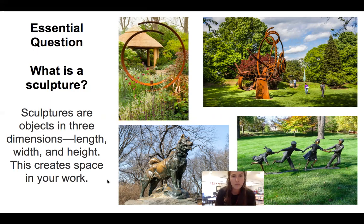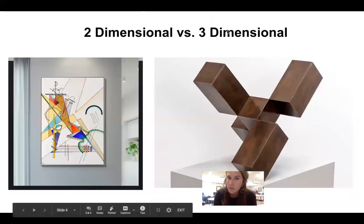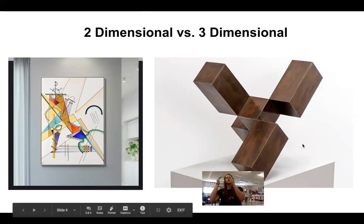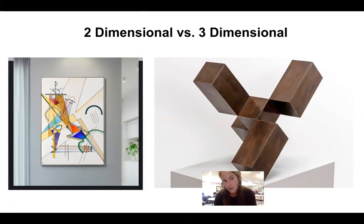So let's talk 2D versus 3D. A painting is going to be 2D. It's going to be flat. In a sculpture, it's going to be in the round. You can see all the way around it. So if I were to go up to this painting over here, and I walked up to it, and I looked from the side,